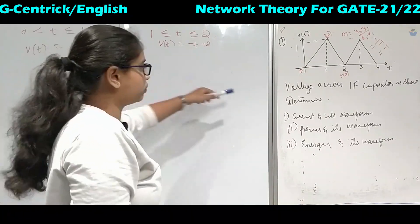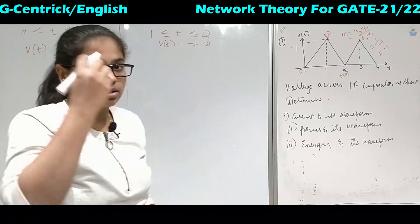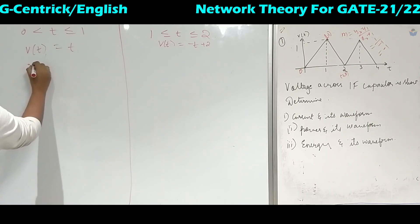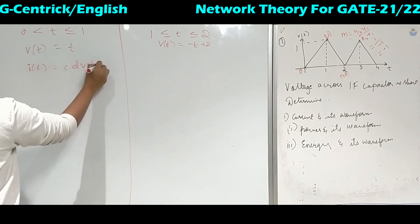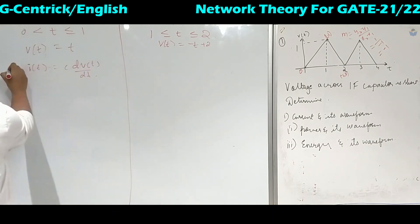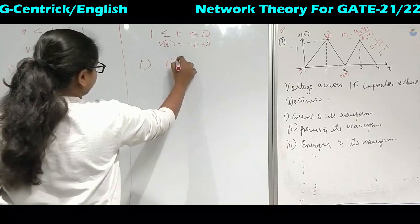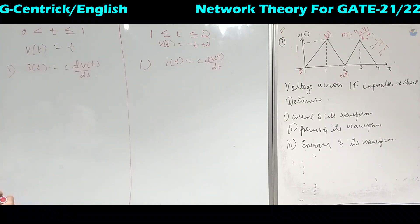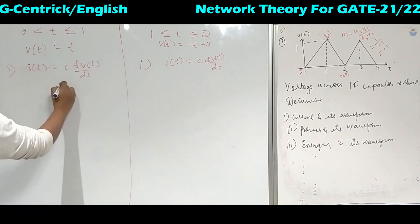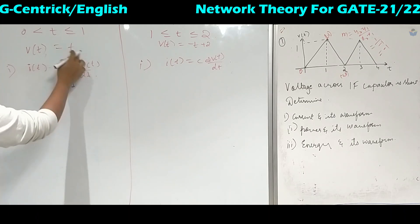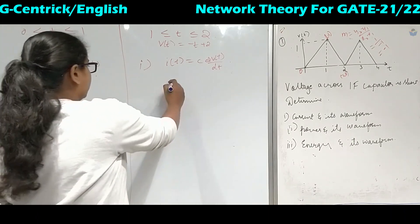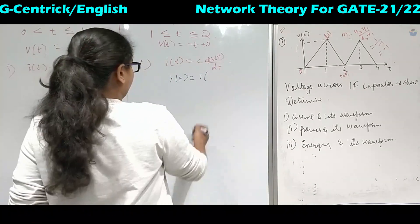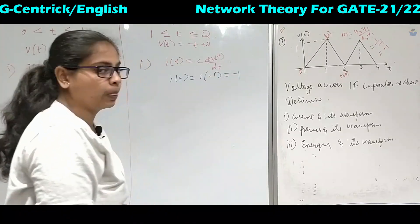We will now find the current across the capacitor. The formula is I(t) equals C times dV(t)/dt. For 0 to 1: C equals 1, and the derivative of t is 1, so I(t) equals 1. For 1 to 2: C equals 1, and the derivative of minus t plus 2 is minus 1, so I(t) equals minus 1.